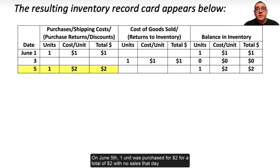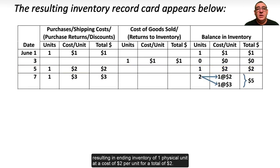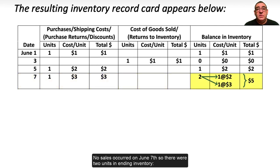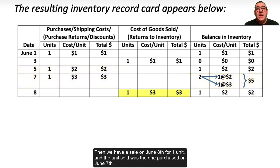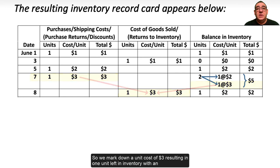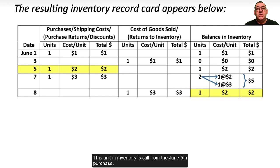On June 5th, one unit was purchased for $2, with no sales that day, resulting in ending inventory of one unit at a cost of $2. On June 7th, another unit is purchased at a cost of $3 for a total cost of $3. No sales occurred on June 7th, so there were two units in ending inventory — one at a cost of $2 and the other at a cost of $3 for a total of $5. Then on June 8th, one unit is sold — the unit purchased on June 7th — so we mark down a unit cost of $3, resulting in one unit left in inventory with an associated cost of $2. This unit in inventory is still from the June 5th purchase.